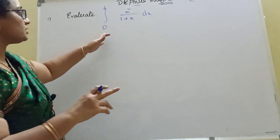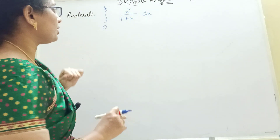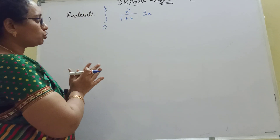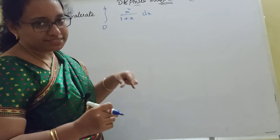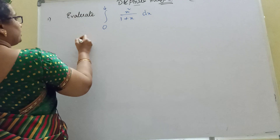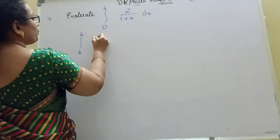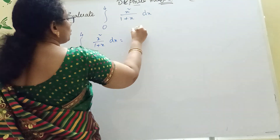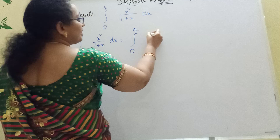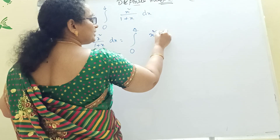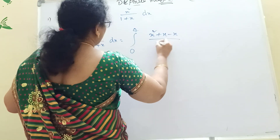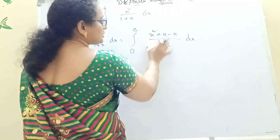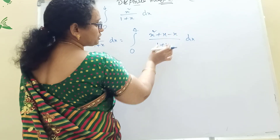Suppose we have the next problem: integration from 0 to 4 of x squared divided by (1 plus x) dx. We need to simplify the integrand by adding and subtracting in the numerator so we can split x squared by the denominator.